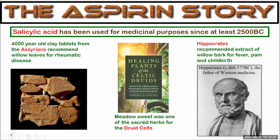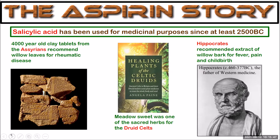Salicylic acid has been used for thousands of years for medicinal purposes. There are 4,000-year-old clay tablets from the Assyrians that recommend the use of willow leaves for rheumatic disease. Meadow sweet was one of the sacred herbs for the Druid Celts. Hippocrates, known as the father of western medicine — when you finish your medical degree you'll swear the Hippocratic oath — recommended extract of willow bark for fever, pain, and childbirth. Ancient Egyptians also described the use of willow leaves or myrtle to treat joint pain.